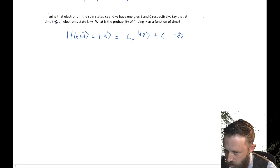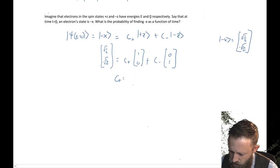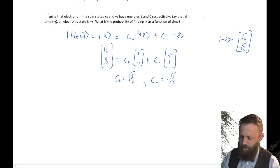If you remember, minus x is just [√(1/2), −√(1/2)]. So if we're trying to write [√(1/2), −√(1/2)] in terms of a constant times [1, 0] plus another constant times [0, 1], it should be pretty clear that c-plus needs to equal √(1/2) and c-minus needs to equal −√(1/2). That's the whole idea.